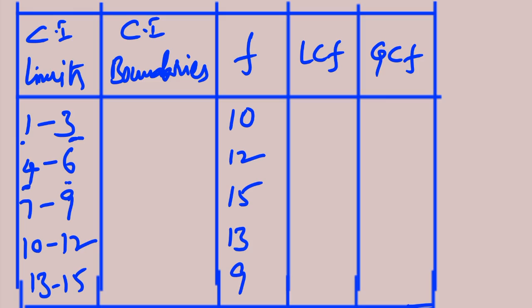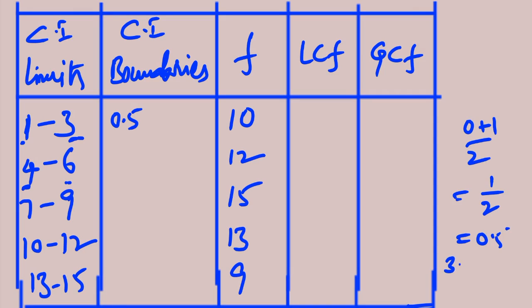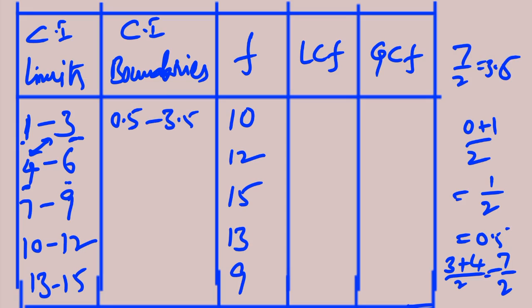Since these are inclusive class intervals, we cannot directly say these are boundaries. To convert: the first observation is 1, and before 1 comes 0, so (0 + 1) / 2 = 0.5. That is the lower boundary of the first class interval. For the upper boundary, take the average of the upper limit of the first class and the lower limit of the next class: (3 + 4) / 2 = 7 / 2 = 3.5. So 3.5 is the upper boundary of the first class interval.